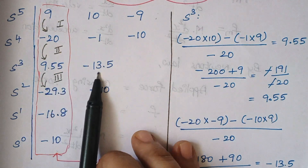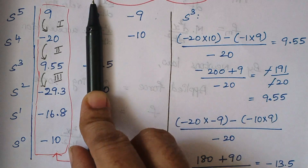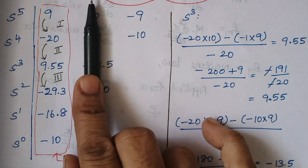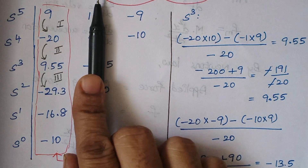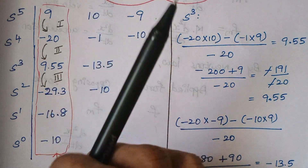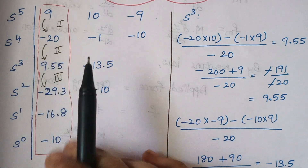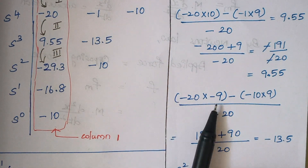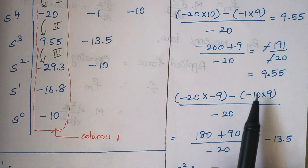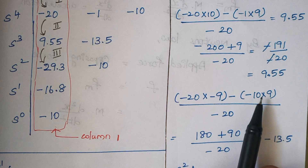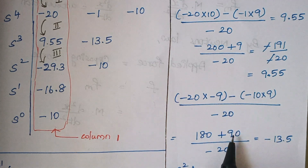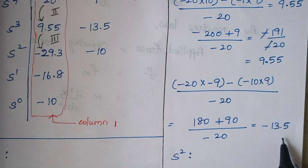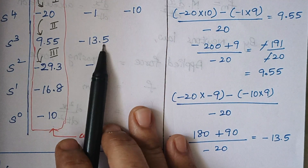For the second element of S^3, we compute: (−20 × (−9) − (−10) × 9) / (−20). That is (180 + 90) / (−20) — wait, solving: minus 20 into minus 9 is +180, and minus of minus 10 into 9 gives +90, so (180 + 90) / (−20) = −13.5. So the second element of the S^3 row is −13.5.